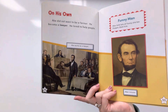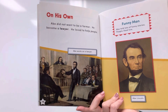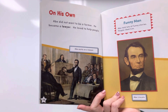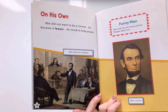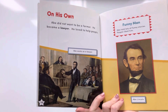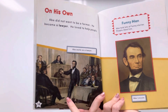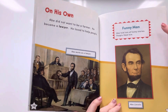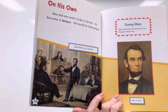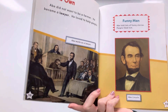On his own. Abe did not want to be a farmer. He became a lawyer. He loved to help people. Abe works as a lawyer. Funny man. Abe told lots of funny stories. People liked him.